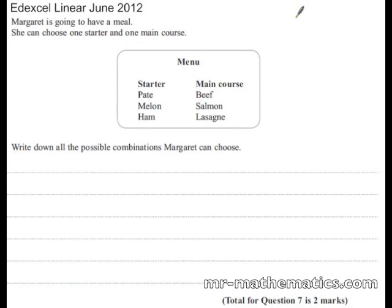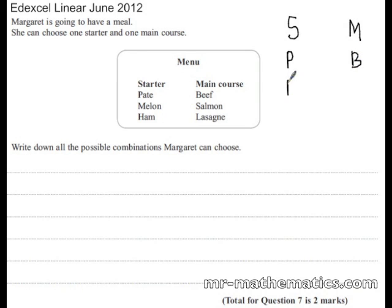To find all the combinations from the starter and the main course, we are going to use a logical exhaustive method. First of all we will do the pâté and the beef, then the pâté and the salmon, and then the pâté and the lasagna.